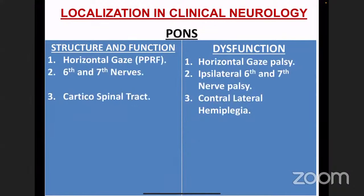The pons contains the center for horizontal gaze — the PPRF, paramedian pontine reticular formation. If the pons is affected, horizontal gaze is impaired. Importantly, pontine infarction can cause locked-in syndrome: the patient cannot move eyes horizontally, cannot move upper or lower limbs, but vertical eye movement is preserved because the midbrain is intact. The 6th and 7th cranial nerves are in the pons, causing ipsilateral 6th and 7th palsy. The corticospinal tract is affected, causing contralateral hemiplegia.